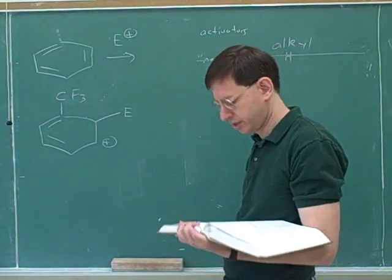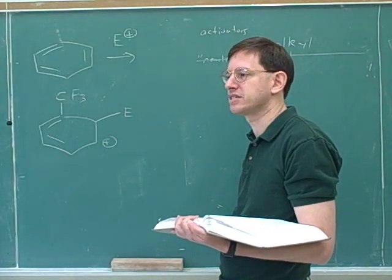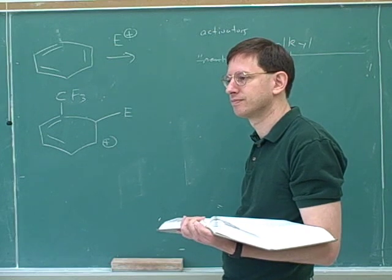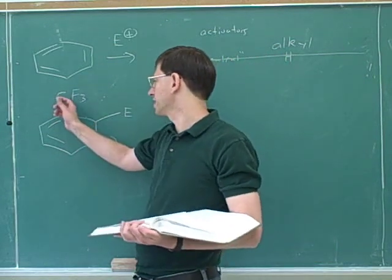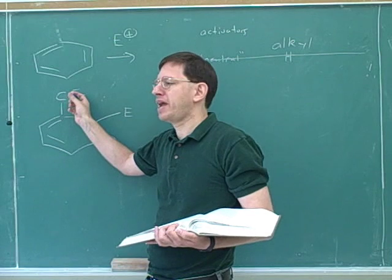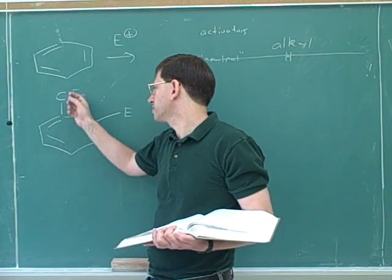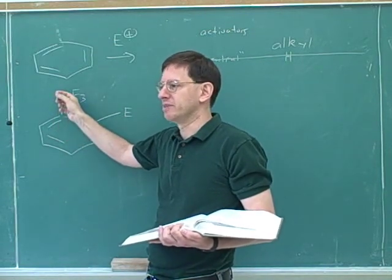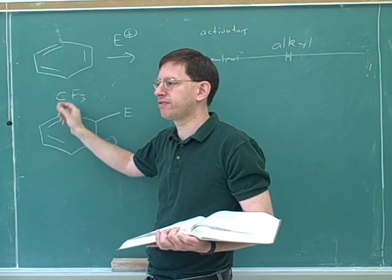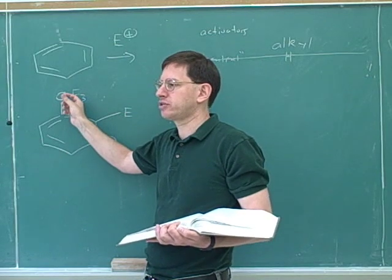What about a CF3 group — is it electron donating or withdrawing? It's electron withdrawing. The fluorines are very electronegative, so by induction they pull electrons toward them. Although fluorines have lone pairs, there is no resonance between the fluorine and the benzene because they're separated by the carbon — they're not close enough. So there are no resonance effects here; CF3 is electron withdrawing purely by induction, making it a deactivator.